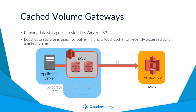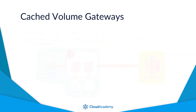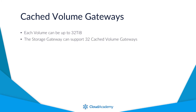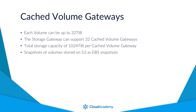As part of this volume creation, you must also select some local disks on-premise to act as your local cache and a buffer for data waiting to be uploaded to S3. During the upload process, the data is encrypted using an SSL channel and then encrypted within SSE-S3. Cached volume gateways support each volume up to 32 terabytes in size, with support for up to 32 volumes, meaning a total storage capacity of 1024 terabytes per cache volume gateway. Although all primary data is stored in S3, it is still possible to take incremental backups of these volumes as EBS snapshots, enabling quick deployment of data sets which can be attached to EC2 instances as EBS volumes in a DR scenario.